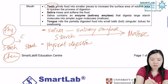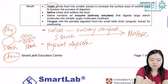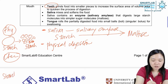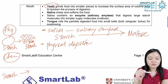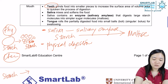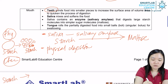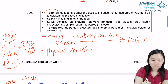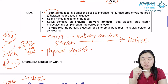Physical digestion only breaks things down physically — the identity is still the same, Kelvin is still Kelvin. In chemical digestion, starch after chemical digestion turns into maltose. The identity changes.